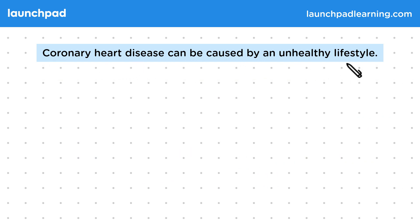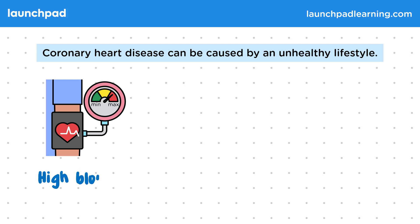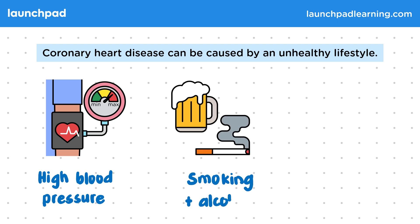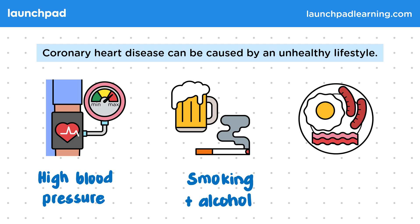What causes this build-up of fat? Coronary heart disease can be caused by an unhealthy lifestyle. High blood pressure can damage the arteries, making coronary heart disease more likely. Smoking and drinking excessive amounts of alcohol can also cause cardiovascular disease. High cholesterol and a poor diet high in saturated fats can lead to more fatty deposits building up. Cholesterol is an important biological molecule for cell membranes, but it can lead to cardiovascular disease if found in high levels in the blood.